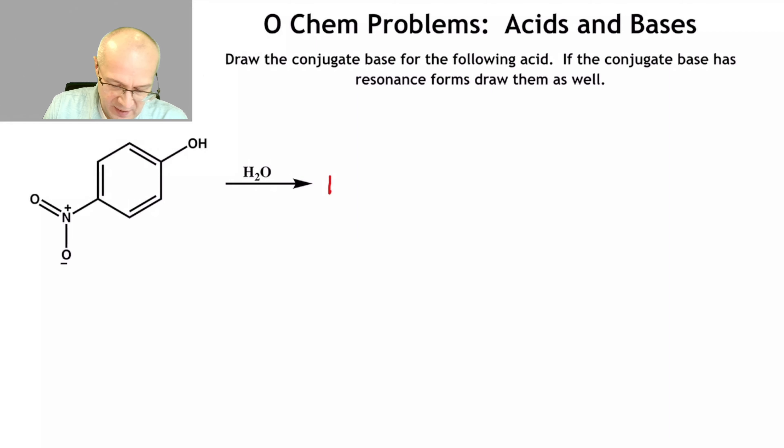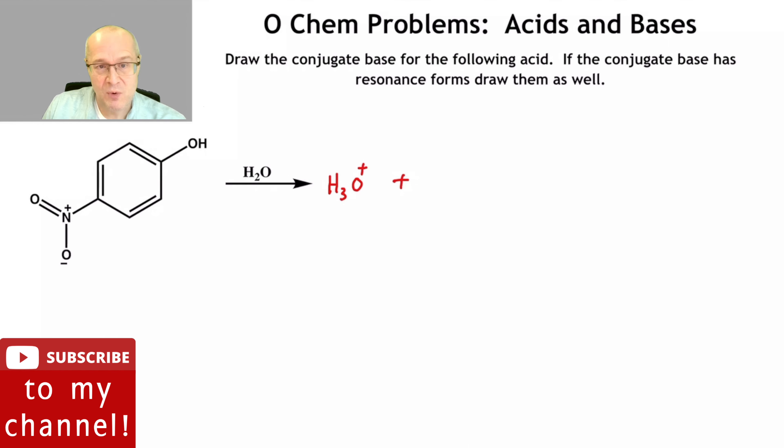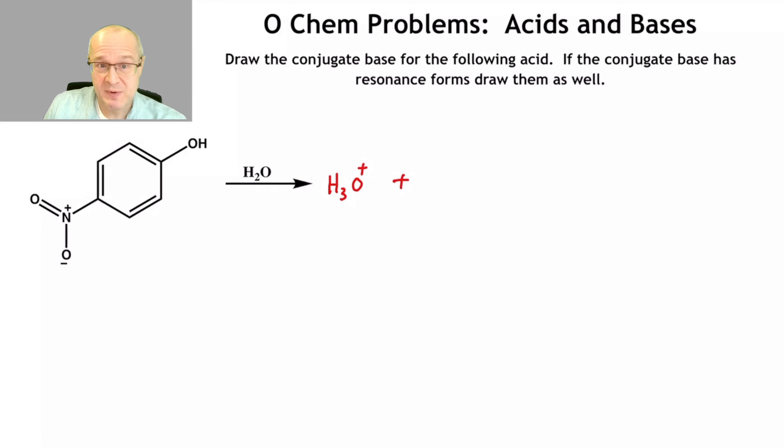So we have water and an acid. So there's going to be hydronium for sure. Now, I can just tell you, that is your most acidic proton. Generally speaking, protons on oxygen are more acidic than any other protons in your molecule. Of course, that's a generalization. Be very careful with that.